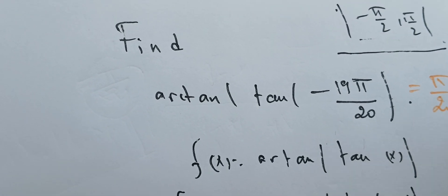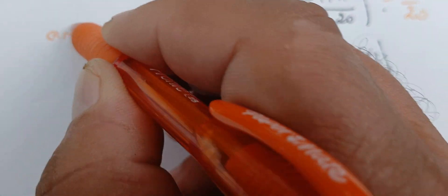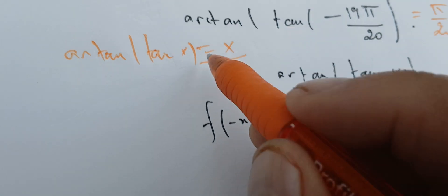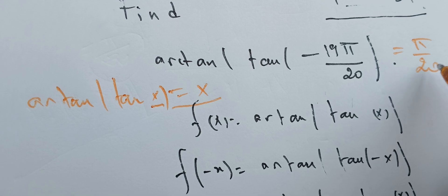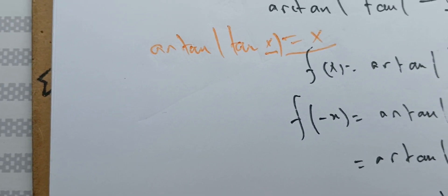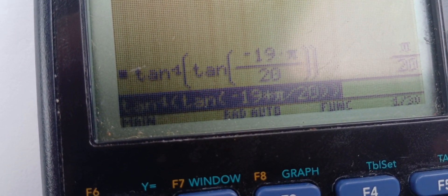In general, we can prove that arctangent of tangent of x equals x, with some restrictions on x. This gives us the result we need. We can check — I did verify with the calculator. If you can see, we get exactly the value of π/20. Very great calculator. Thank you very much.